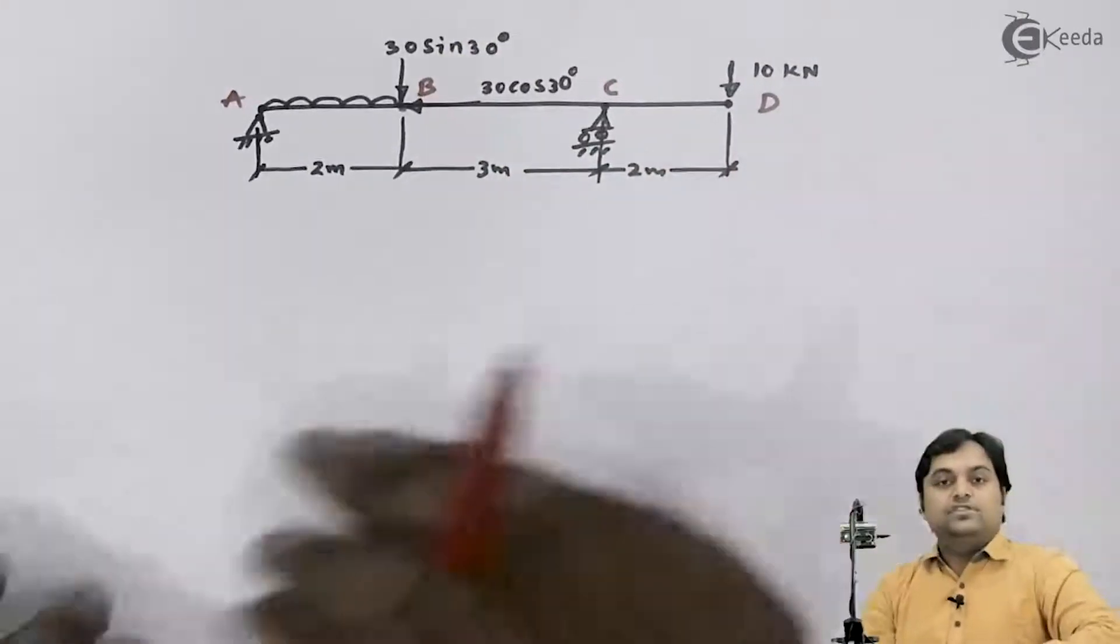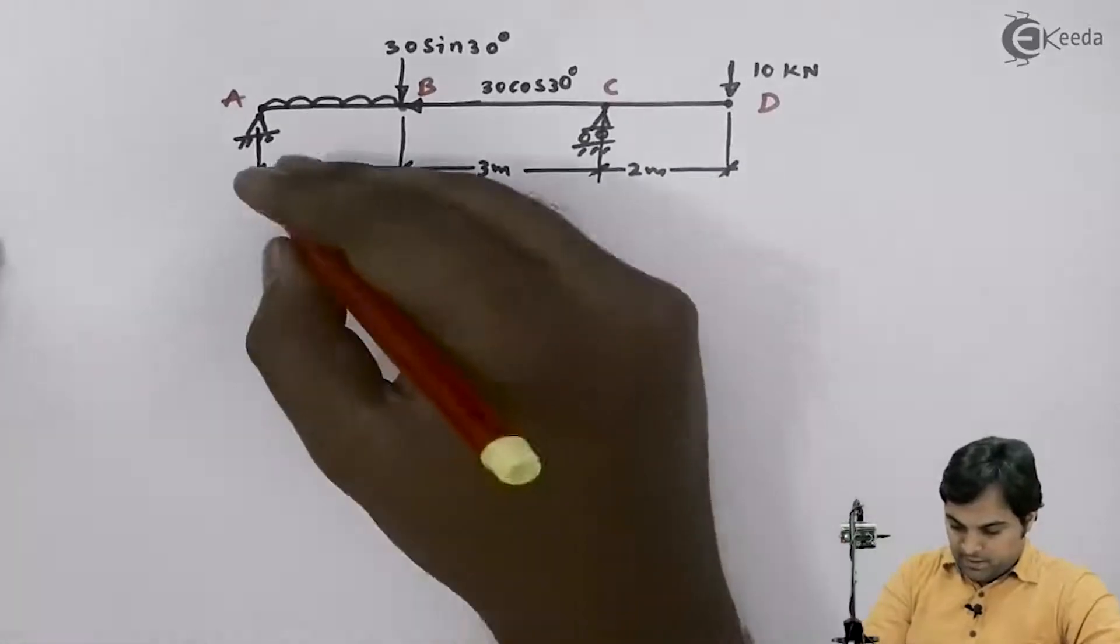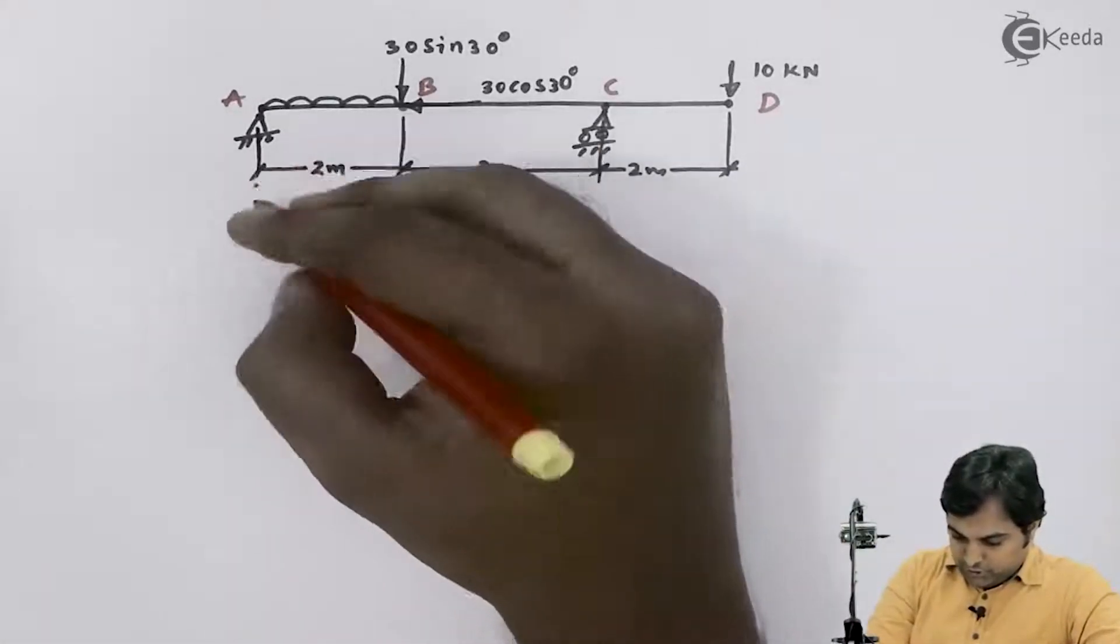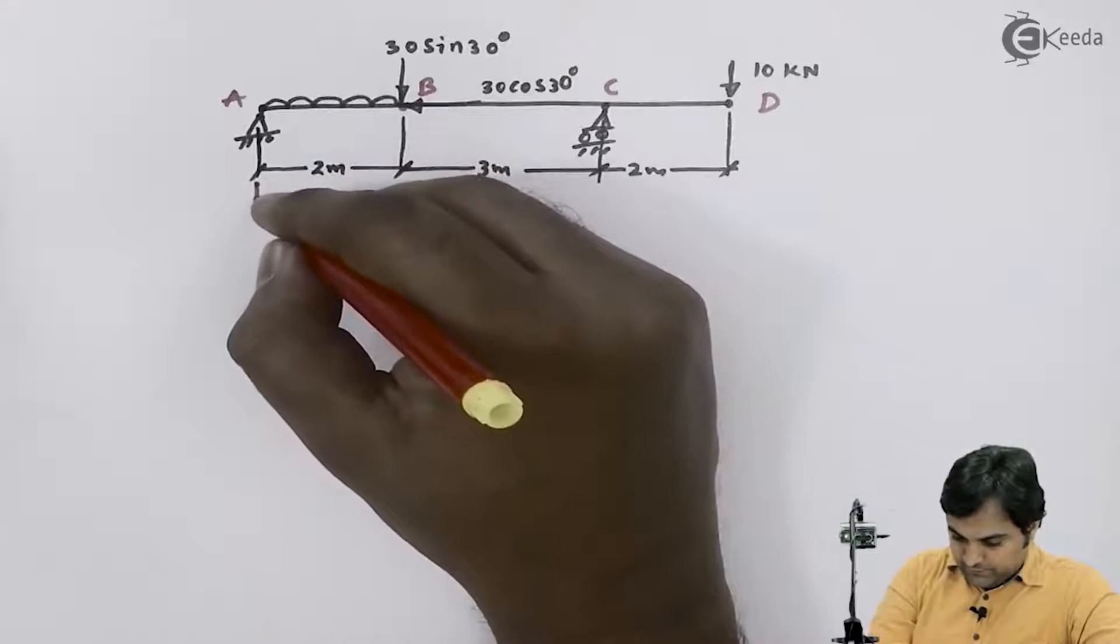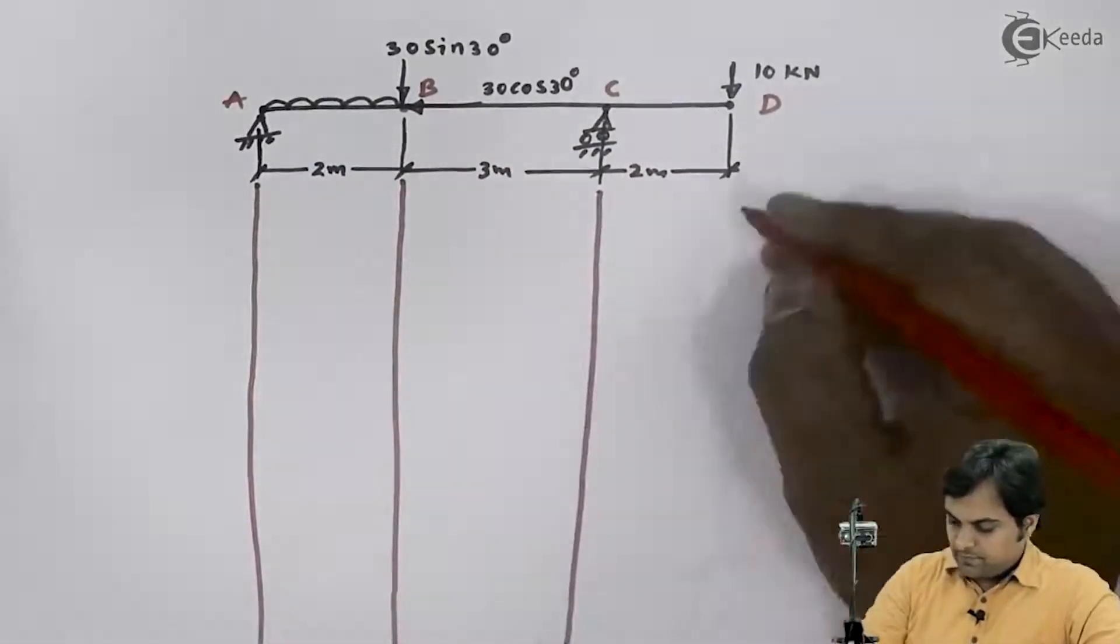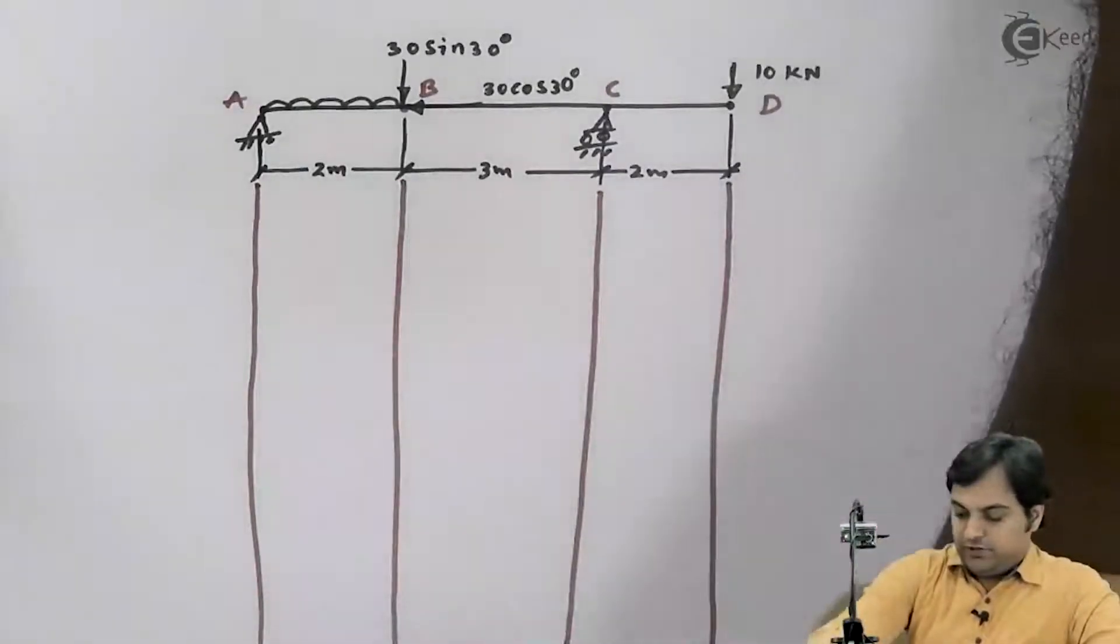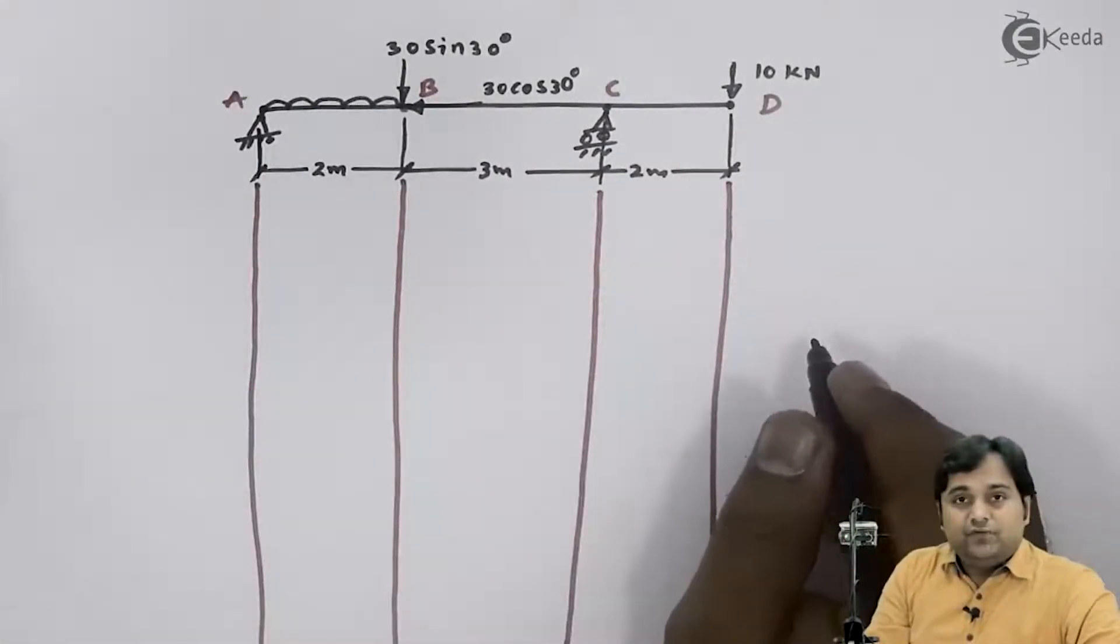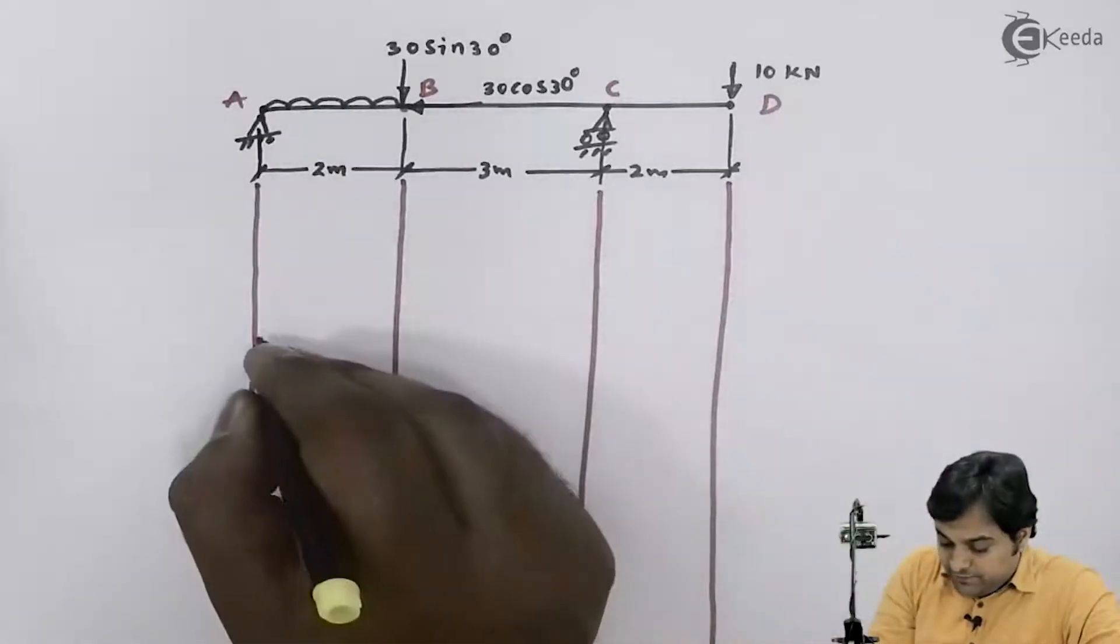Now this is the beam which is provided in the problem. Here I would be extending all the points or projecting them downward for drawing shear force diagram. The length of shear force diagram will be equal to the length of the beam.